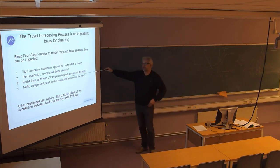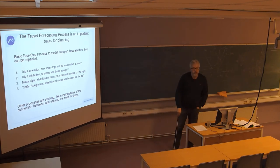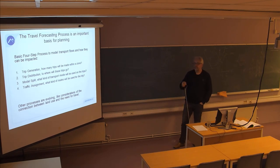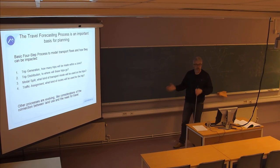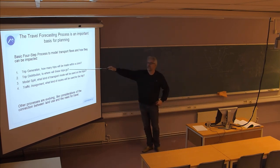The third step is modal split: what kind of transport mode will be used for the trip? In the models we have a very detailed description of transport costs per mode. We use different functional forms to determine whether people will choose their own car, a bus, a train, or a light rail if available, to get between origin and destination.